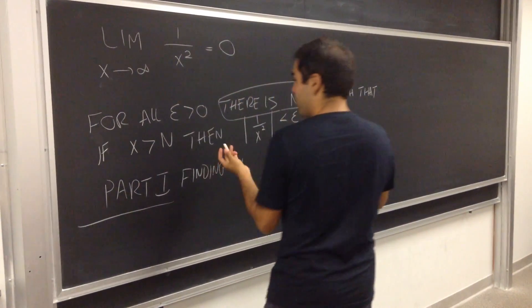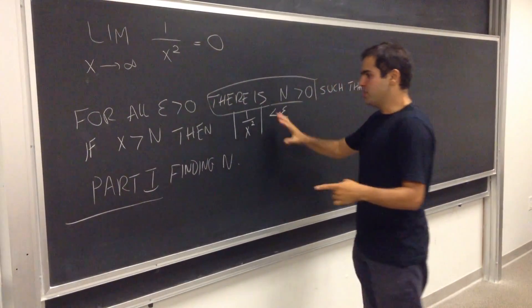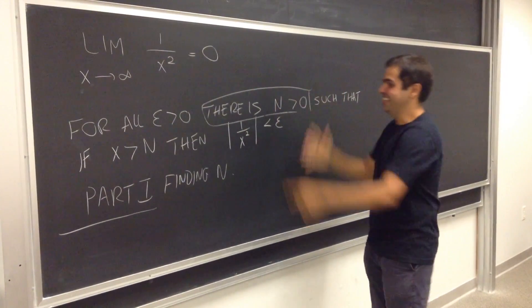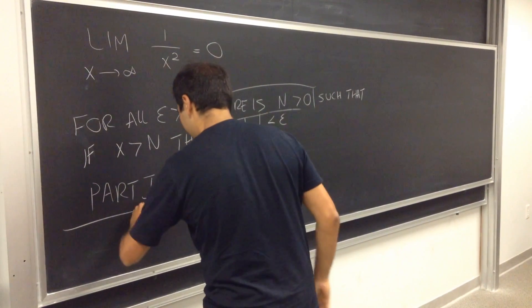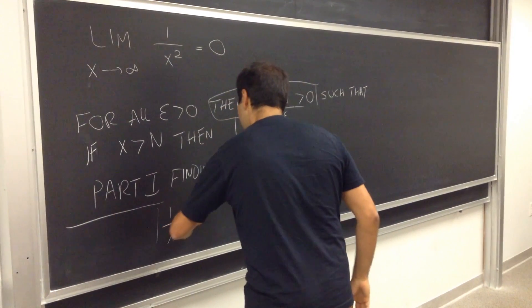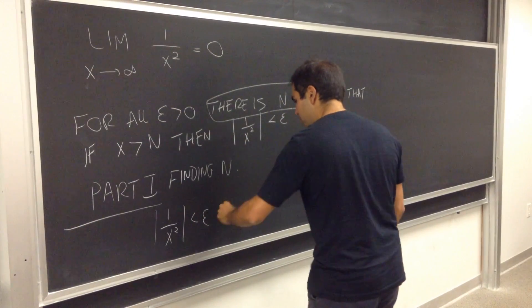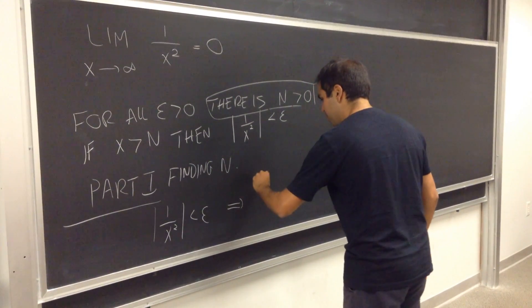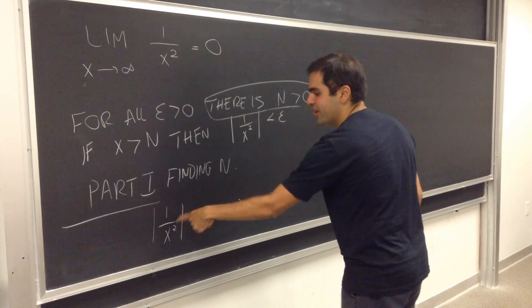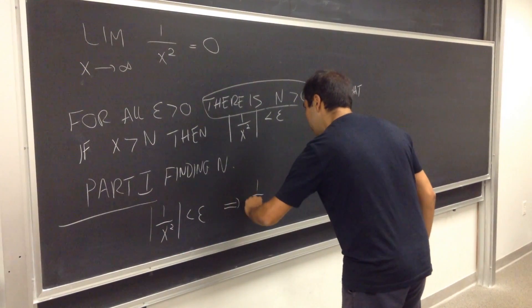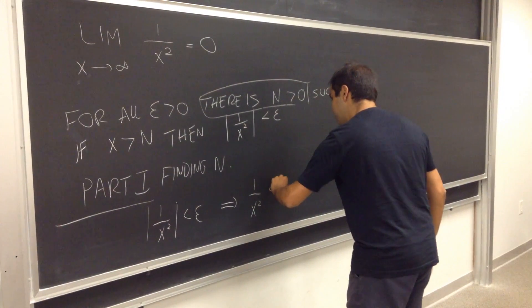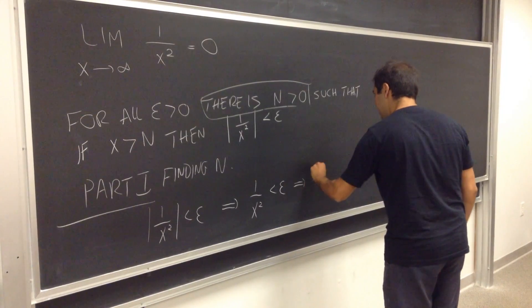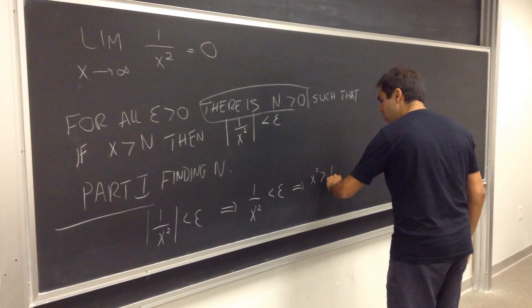And so we want to find N such that if x is large enough, then this is very small, so let's start with this sucker. In other words, 1 over x squared less than epsilon, well, we can actually solve this. It means that this thing is actually positive, so we can remove the absolute value. So it implies 1 over x squared is less than epsilon, and we can solve for x. It means that x squared is bigger than 1 over epsilon,